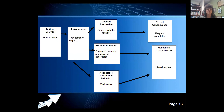Let's look at a case where the setting event is a peer conflict. The antecedent is that the teacher and a peer requested something from the student they weren't able to give — like handing over a ball to play four-square on the playground. Many students don't have the capacity to hand the ball to someone else; sharing is a higher-level skill. The problem behavior escalates to profanity and sometimes physical aggression. The acceptable alternative behavior would be to walk away from the peer and the teacher — essentially requesting a break if the situation is that severe.